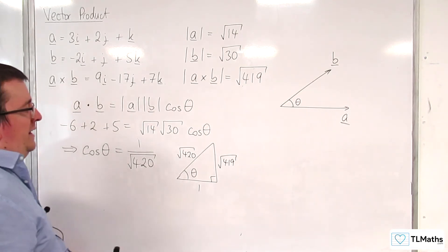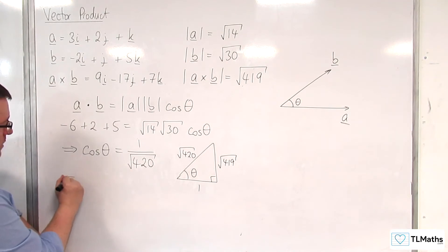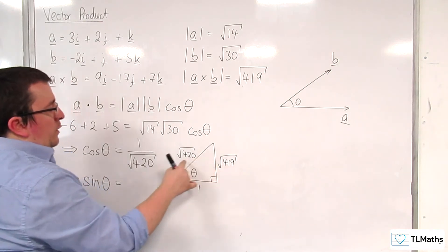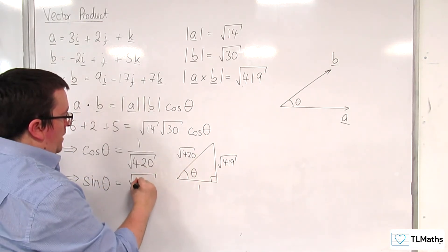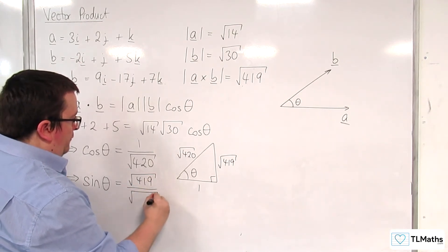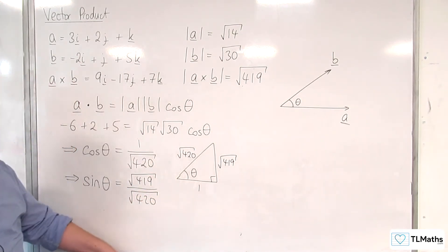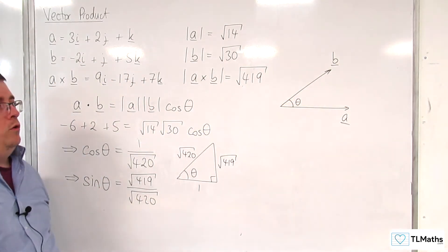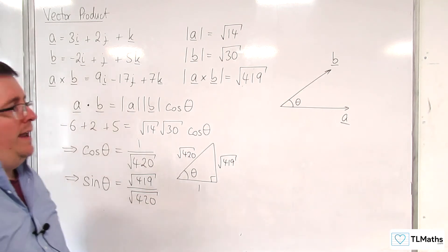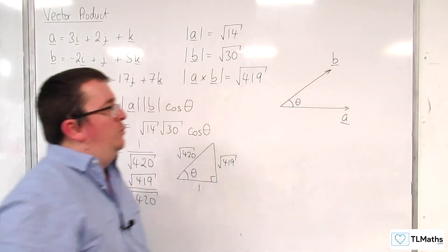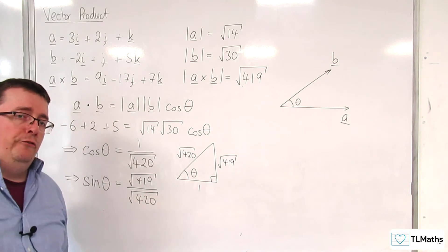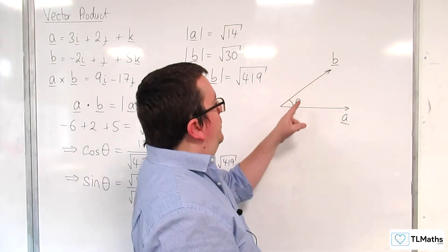So, what that's telling me is that sine of the angle theta is the opposite over the hypotenuse. So, root 419 over root 420. That's sine of my angle. Now, the sine of the angle, if you're thinking about what we do with sine, when we're looking at two sides and the interior angle between them, the trapped angle, then you should be thinking about the area of a triangle formula, 1 half AB sine C.